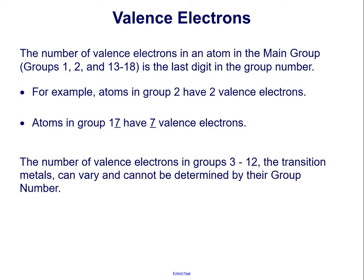The number of valence electrons in an atom in the main group, groups 1, 2, and 13 to 18, is the last digit in the group number. For example, atoms in group 2 have 2 valence electrons. Atoms in group 17 have 7 valence electrons. The number of valence electrons in groups 3 to 12, the transition metals, can vary and cannot be determined by their group number.